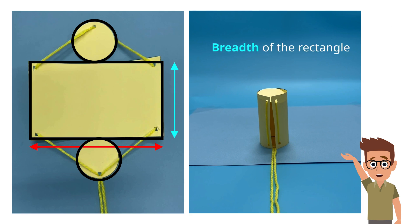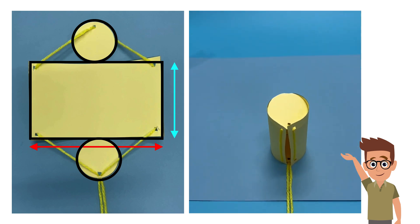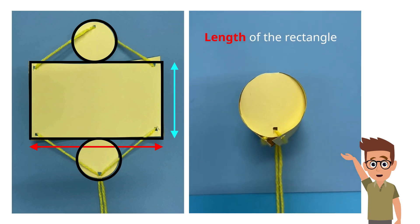The breadth of the rectangle is the height of the cylinder. And the length of the rectangle is the circumference of the circle. Did you get it right?